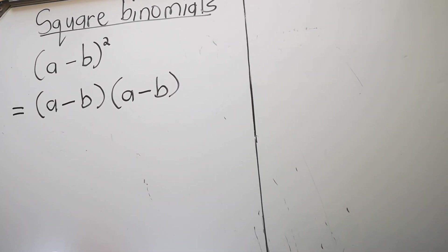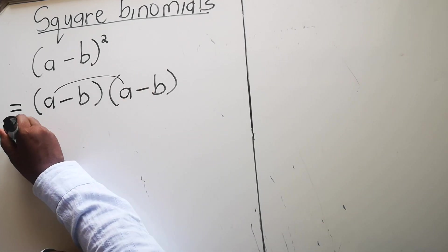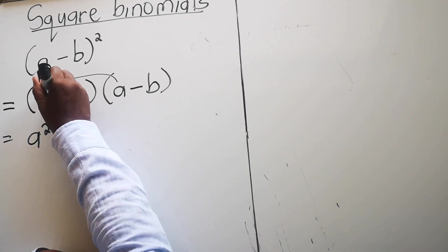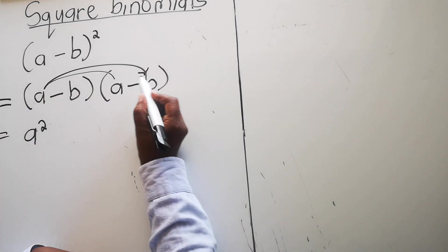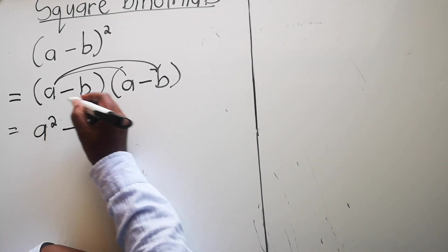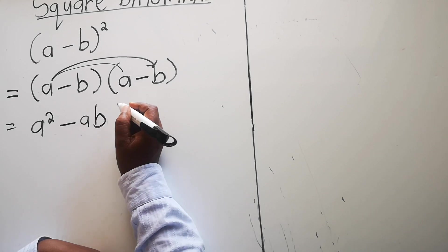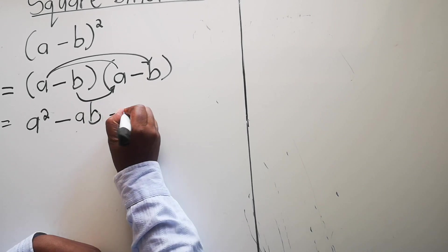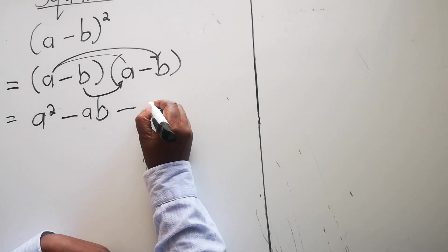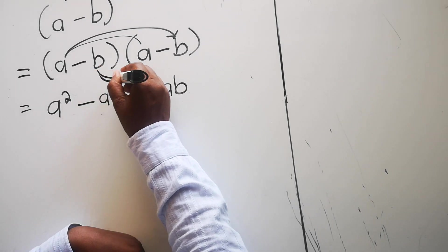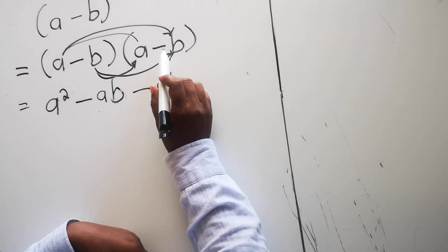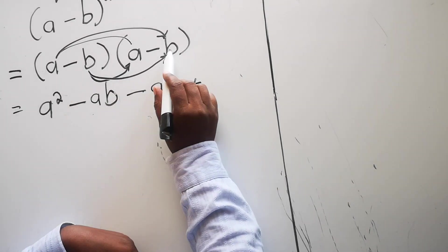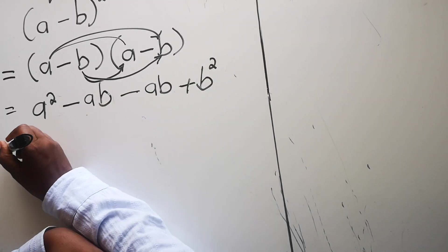We're going to follow the rules of multiplying binomials. First, a times a gives us a squared. Then this term multiplied by the next term: positive times negative gives negative a times b, which is -ab. Then we multiply the second term with the first: negative times positive gives -ab. Then the last: negative times negative gives positive b squared.